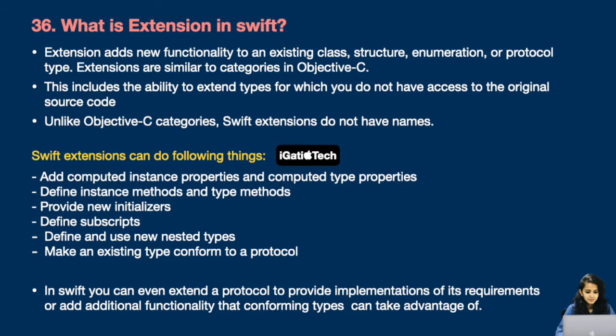Swift extensions can do the following: add computed instance properties and computed type properties, define instance methods and type methods, provide new initializers, define subscripts, define and use new nested types, and make an existing type conform to a protocol. In Swift, you can even extend a protocol to provide implementations of its requirements or add additional functionality that conforming types can take advantage of.